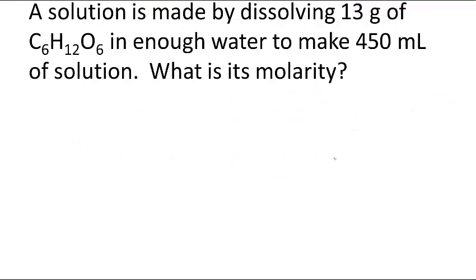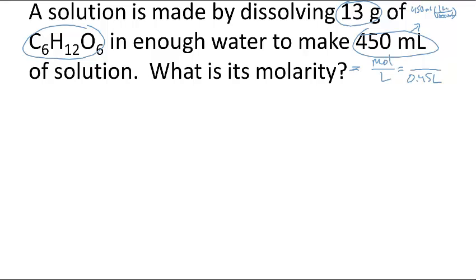One more practice. A solution is made by dissolving 13 grams of that sugar in enough water to make 450 milliliters of solution. What is the molarity? What is the moles per liter? I have 13 grams of sugar and 450 milliliters. I can already put in that I have 0.45 liters. There's 1,000 milliliters in a liter, so 450 milliliters times 1 liter over 1,000 milliliters, and I get 0.45 liters. Now I have my liters, I need to know how many moles I have. I have 13 grams of this sugar. The molar mass is 180 grams per mole.